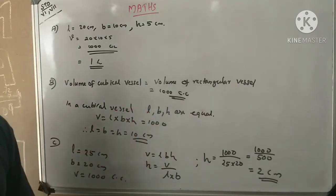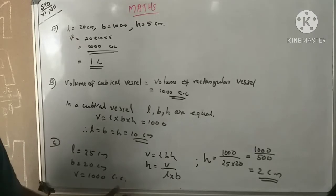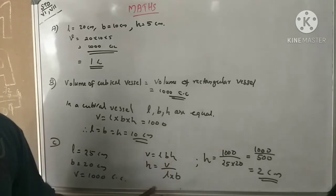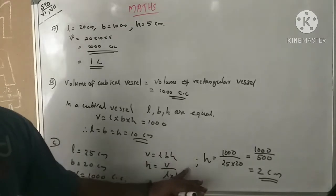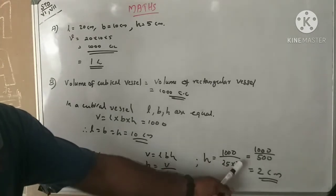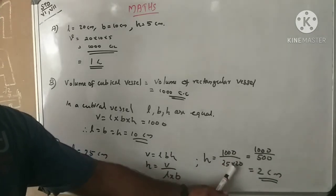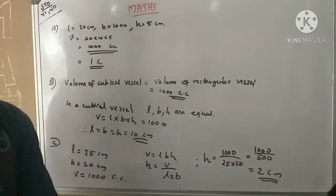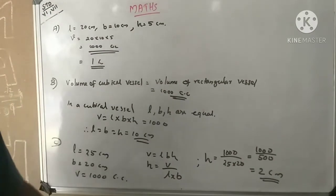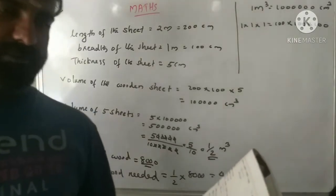The volume equals length times breadth times height, which is 1000 cubic centimeters. So height equals 1000 divided by 25 into 20, which equals 2 centimeters.